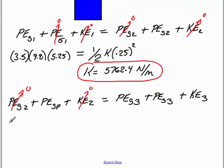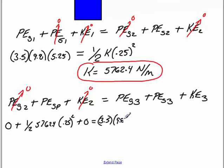So we go ahead and we'll write everything down. And we will get 0 plus 1/2 times our spring constant of 5762.4 times our full compression of 0.25 squared, plus our kinetic energy which is 0, is equal to our mass 3.5 times 9.8 times 0.10, plus the spring potential. We are compressed 15 centimeters. That's going to be 1/2 times my k value of 5762.4 times 0.15 squared, plus 1/2 times 3.5 v squared.